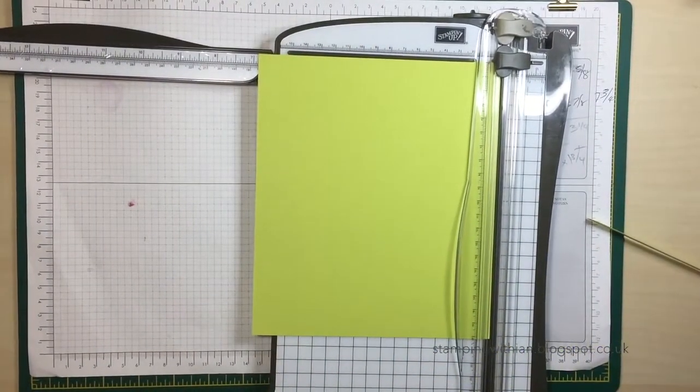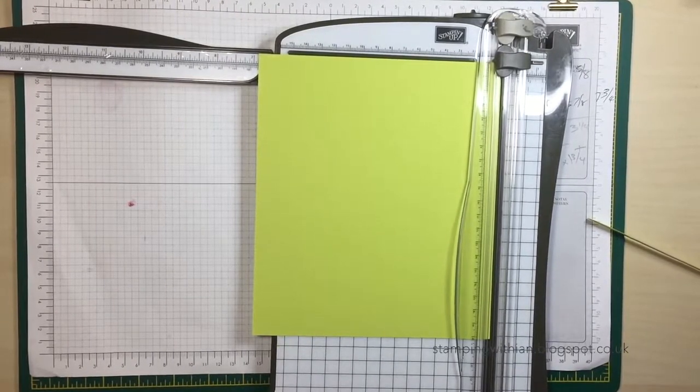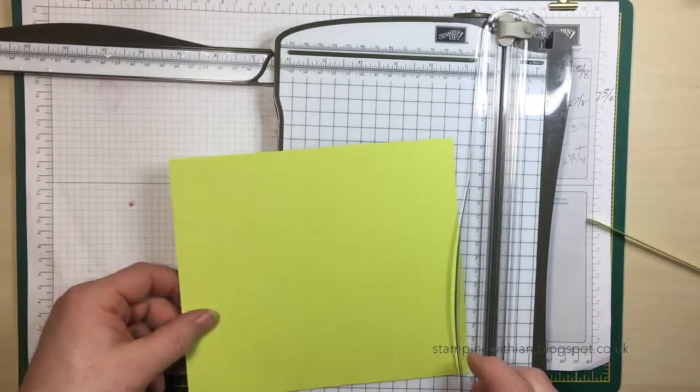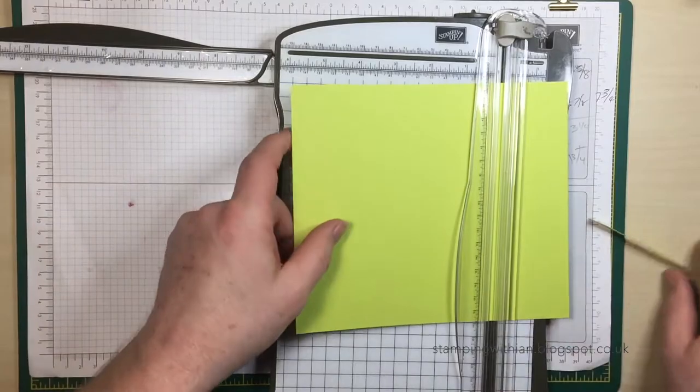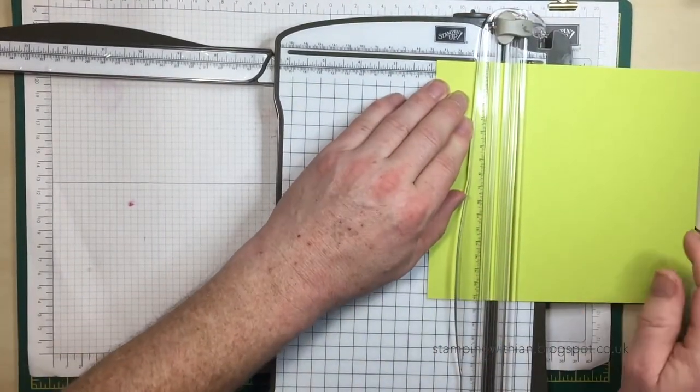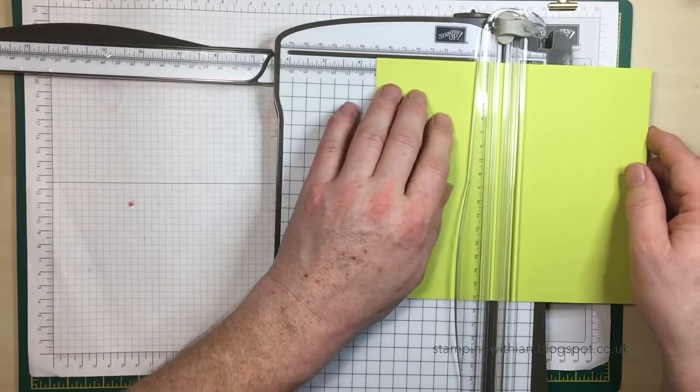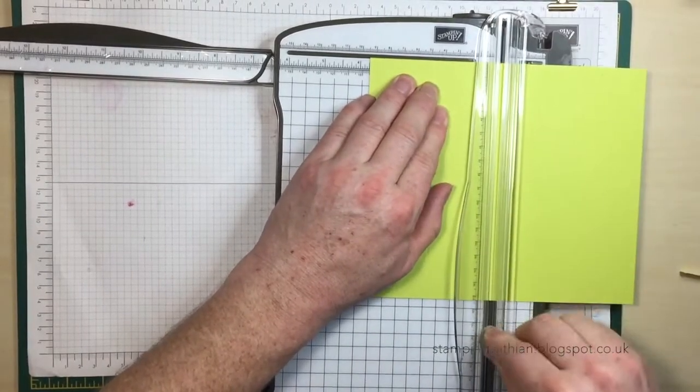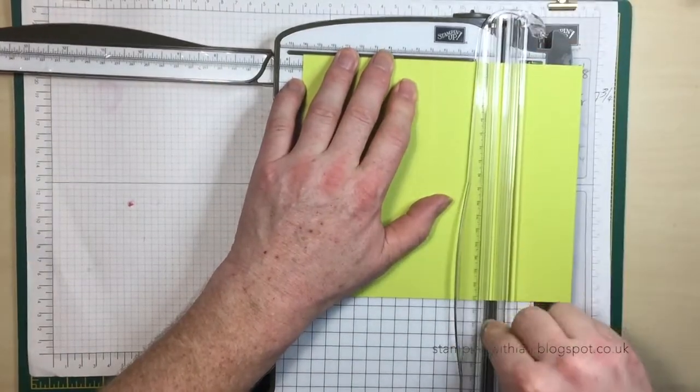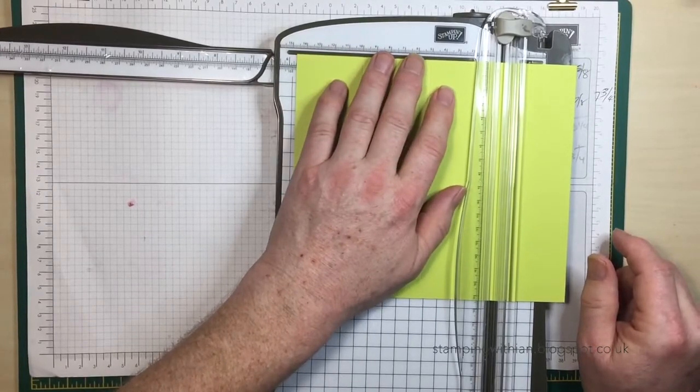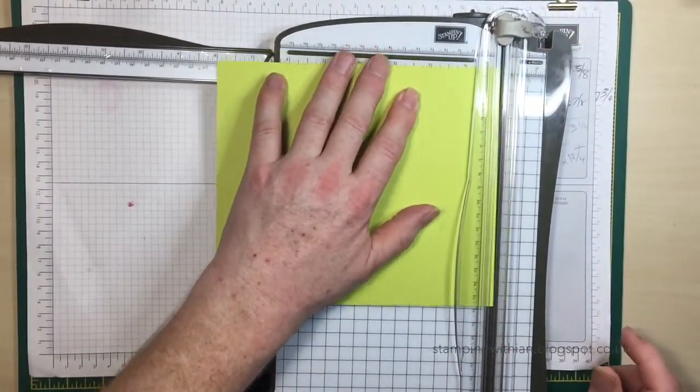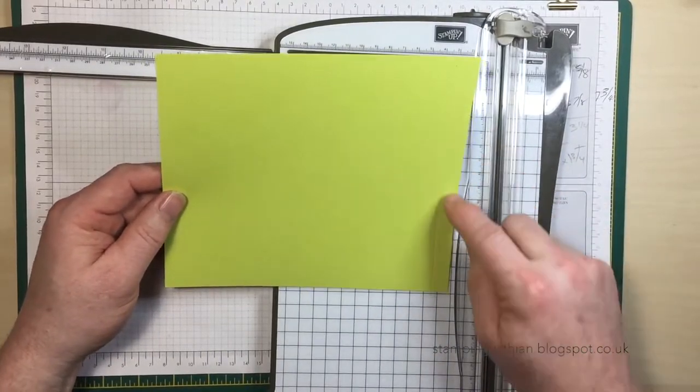Put the piece of card to one side. Now we have some scoring to do, so getting rid of the cutting blade. On the long side, the 8 inch side, we're going to score at 1 and 7/8, 3 and 3/4, 5 and 5/8, and 7 and 1/2. This bit here will be the bit that we glue at a later stage.